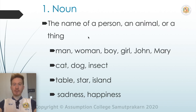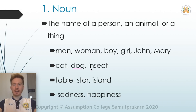So these are nouns: a man, a woman, a boy, a girl, John and Mary. These are all people and names. We have a cat, a dog, an insect — these are animals. We have a table, a star, an island — and these are things.